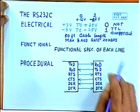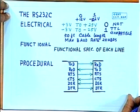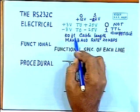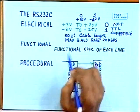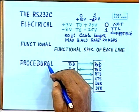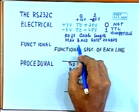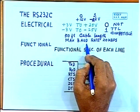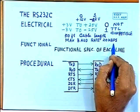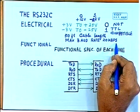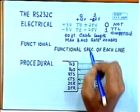You have to use some extra device to make it TTL compatible. The maximum cable length is 50 feet. The maximum baud rate is 20 kilobits per second — note that I am specifying baud rate, not data rate. This is the electrical specification for RS-232C.